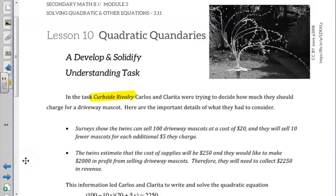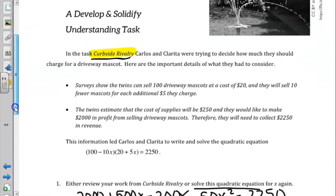In Lesson 10, Quadratic Quandaries, we go back to the task Curbside Rivalry, where Carlos and Clarita are trying to decide how much they should charge for a driveway mascot. The details are repeated below.